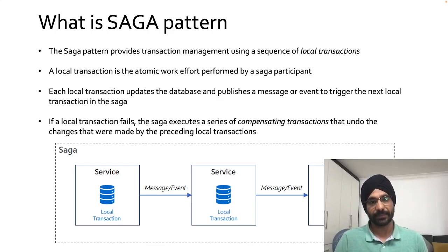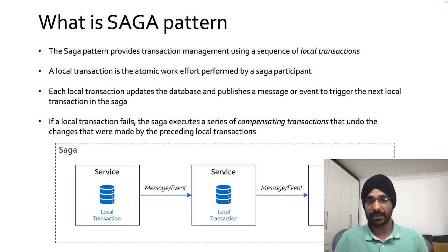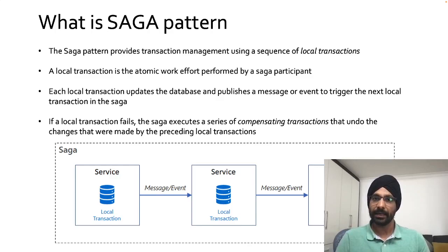A local transaction is the atomic work effort performed by a SAGA participant. Each local transaction updates the database and publishes a message or event to trigger the next local transaction in the SAGA. If a local transaction fails, the SAGA executes a series of compensating transactions that undo the changes made by the preceding local transactions.